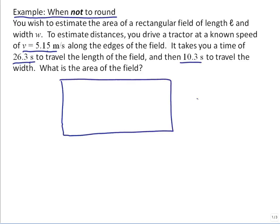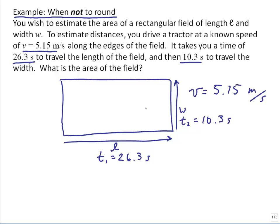We can draw a rectangle here. V is 5.15 meters per second. Let's draw the length as the longer one because the time, which I'll call T1, is 26.3 seconds. That's greater than the width. The time to travel the width is T2, that is 10.3 seconds. So that's going to be shorter. The area equation for a rectangle is length times width, so A equals L times W.